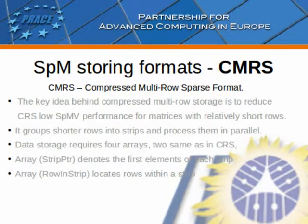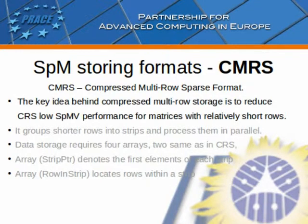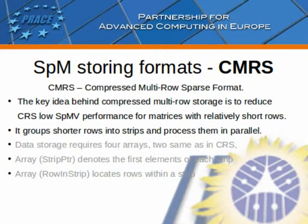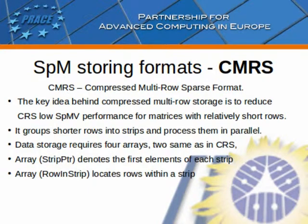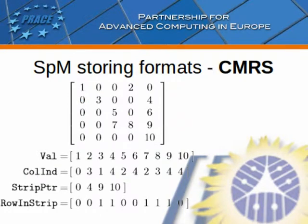CMRS stands for Compressed Multi-Row Sparse format. The key idea behind compressed multi-row storage is to reduce CRS's low SPMV performance for matrices with relatively short rows. It groups shorter rows into strips and processes them simultaneously. Data storage requires four arrays, two of which are the same as in CRS, plus an array denoting the first elements of each strip, and a last array that locates rows within the strip.